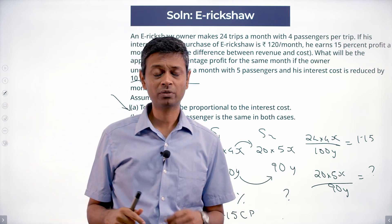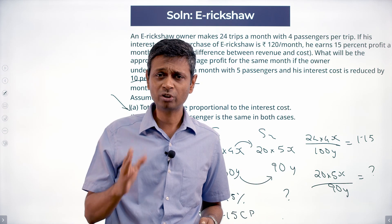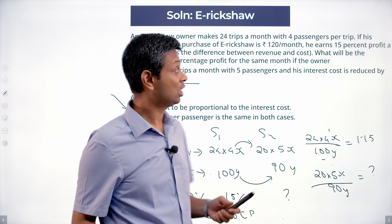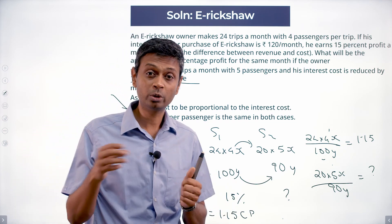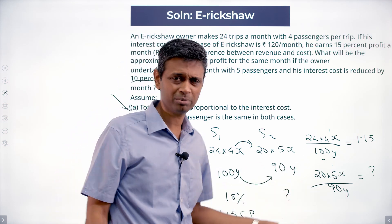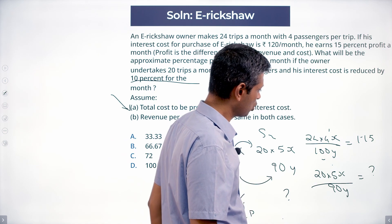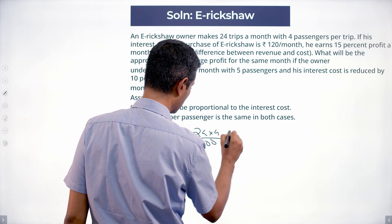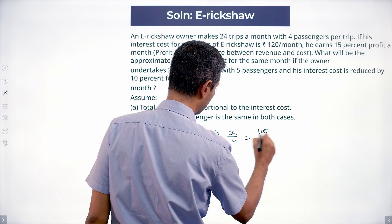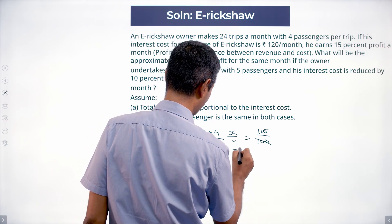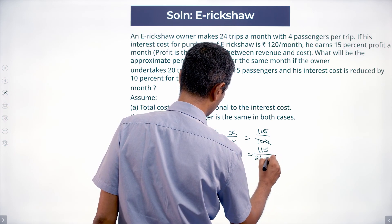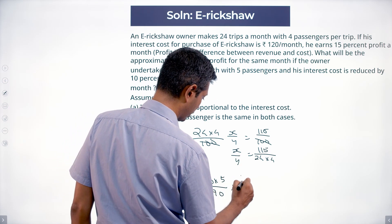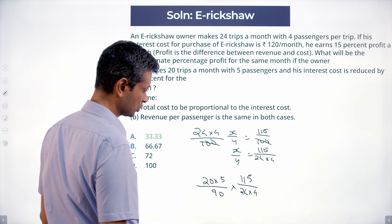Ratios work wonders — we don't have to find the actual profit number. Since SP/CP = 1.15, we set up: (24×4×x) / (100y) = 1.15, which gives x/y = 115 / (24×4). For Scenario 2: (20×5×x) / (90y). We don't need to know the actual cost of 120 rupees per month — if cost was 100 it becomes 90, if it was 10 it becomes 9. Substituting x/y in: (20×5) / 90 × 115 / (24×4).